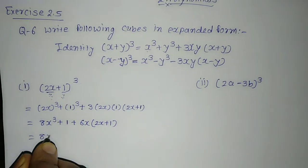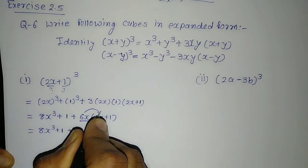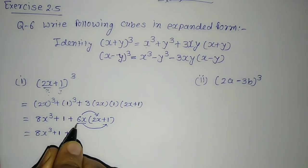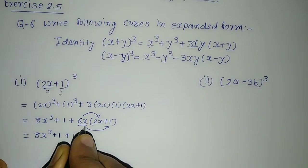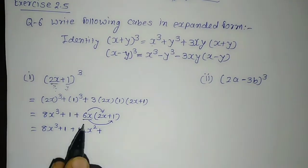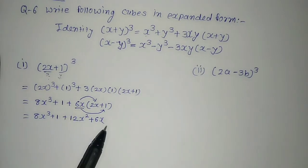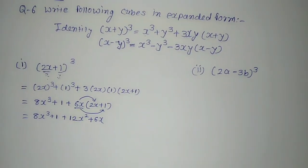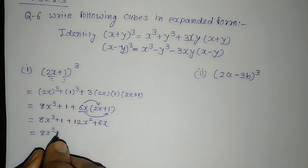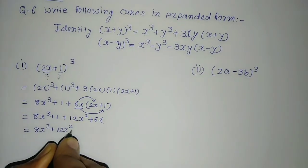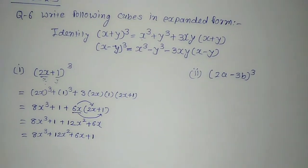Writing the terms as usual: 8x cube plus 1, and now multiplying 6x along with the bracket (2x + 1). So 6x times 2x is 12x square, and 6x times 1 is 6x. The answer is 8x cube plus 1 plus 12x square plus 6x. Arranging in decreasing order of power of x, the final answer is 8x cube plus 12x square plus 6x plus 1.